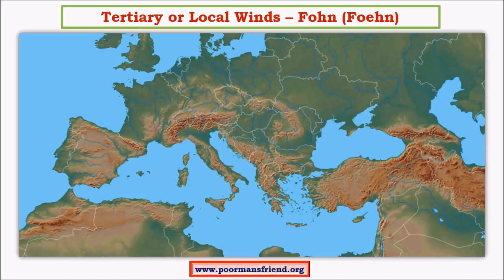Another very important local wind is Foehn. Foehn is a wind that blows from the Mediterranean toward the Alps. Once it reaches the Alps, it causes rains on the windward side, and on the leeward side it becomes very warm, keeping that land free of frost. The temperatures of Central Europe are comparatively warmer than surrounding regions because of this local wind. These are seasonal winds — they blow only during a particular period of the year.